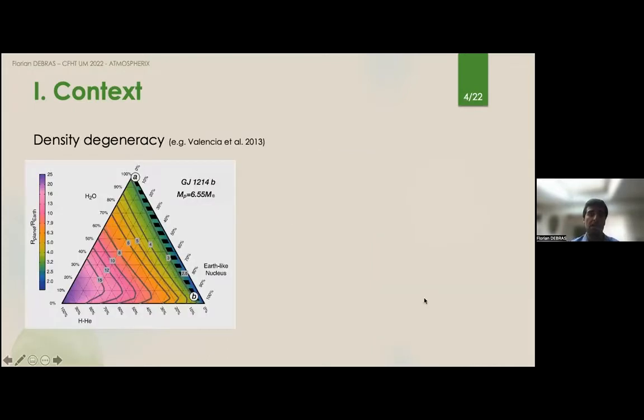Unfortunately if you just have the radius and the mass there is a huge degeneracy in composition, and this is a well-known plot from Valencia et al. 2013. This is a ternary plot where you have the composition of water here, of earth-like nucleus, and of hydrogen and helium following the three axes. The gray lines are the constant radius lines.